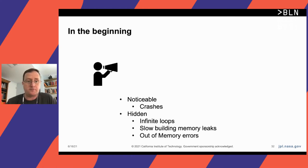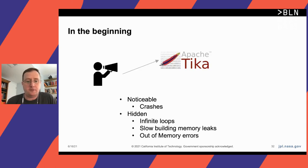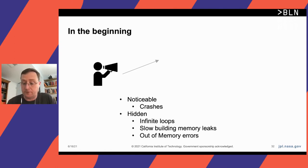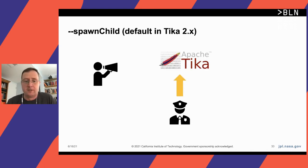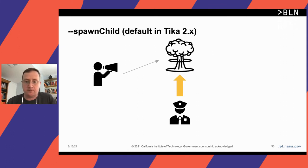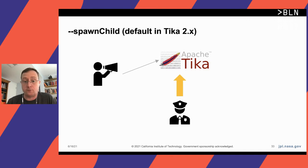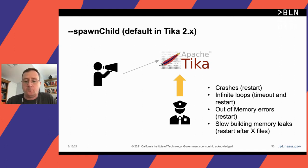So the evolution of Tika server: in the beginning, a client called Tika, and when it crashed, it went down — nothing there to restart it. We added spawn child mode, which will become default in Tika 2.x. A watcher process starts the server, and when a file causes a problem and Tika crashes, the watcher restarts the process. It also looks for timeouts, out-of-memory errors, and crashes.